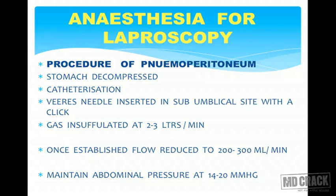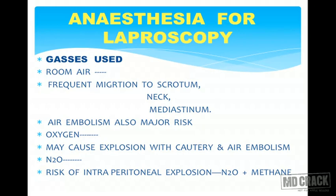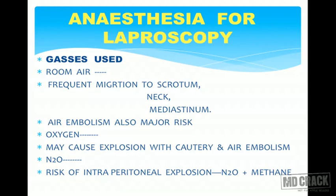Regarding gases used to produce pneumoperitoneum: previously, room air was used, but the main problems are frequent migration of air to the scrotum, neck, or mediastinum, causing swelling in those regions, and air embolism is a major risk. Hence room air is now reserved only for small laparoscopic procedures like laparoscopic tubal ligation done in small centers.